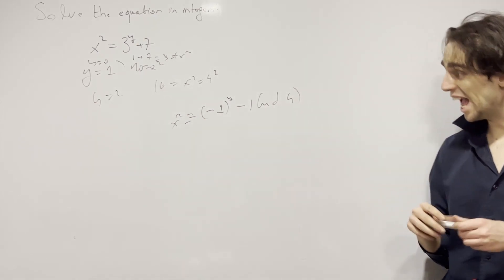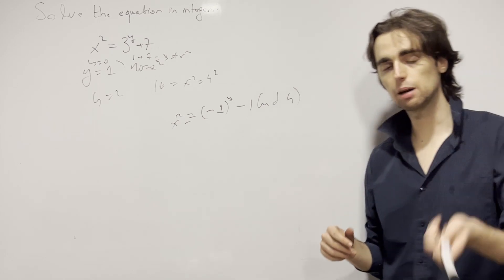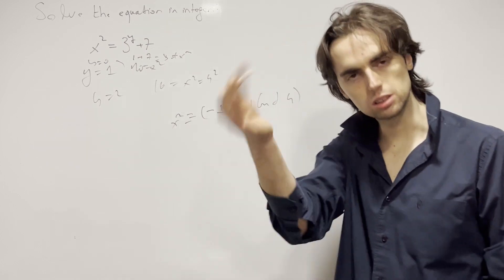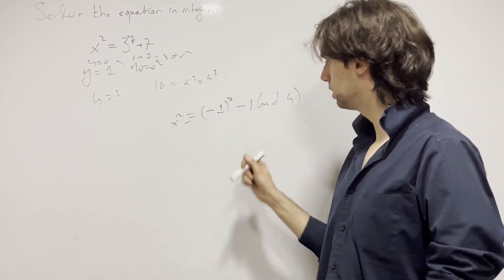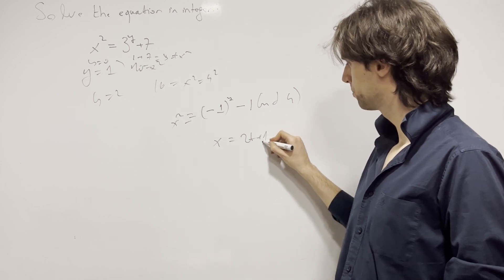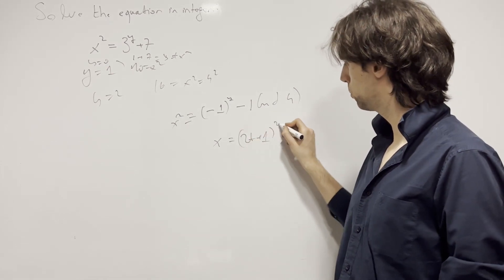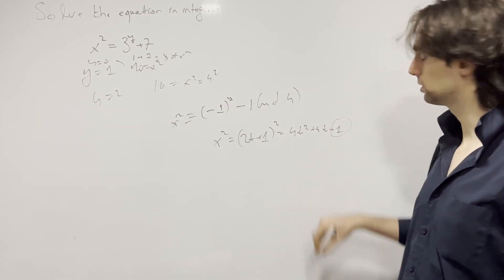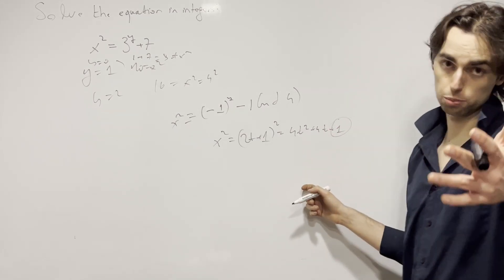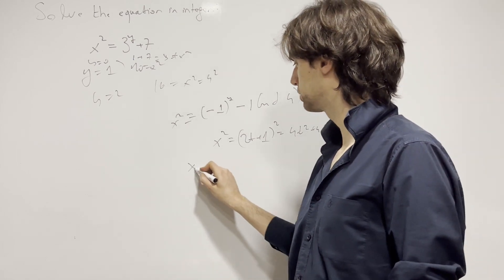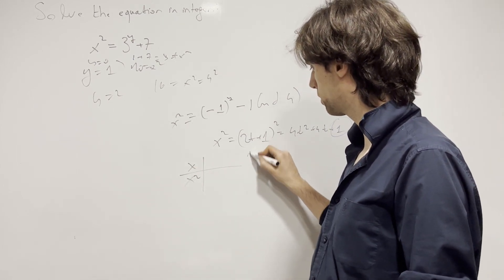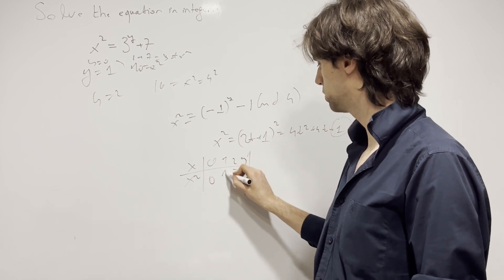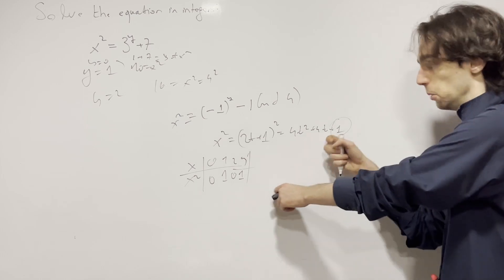What are the remainders that x squared can give when divided by 4? If x is even, x squared is congruent to 0. If x is odd, then x is of the form 2t + 1, and (2t+1)² = 4t² + 4t + 1, which gives a remainder of 1. You could also look at this via a table: x congruent to 0, 1, 2, 3 mod 4 gives x squared congruent to 0, 1, 0, 1. Both approaches work.